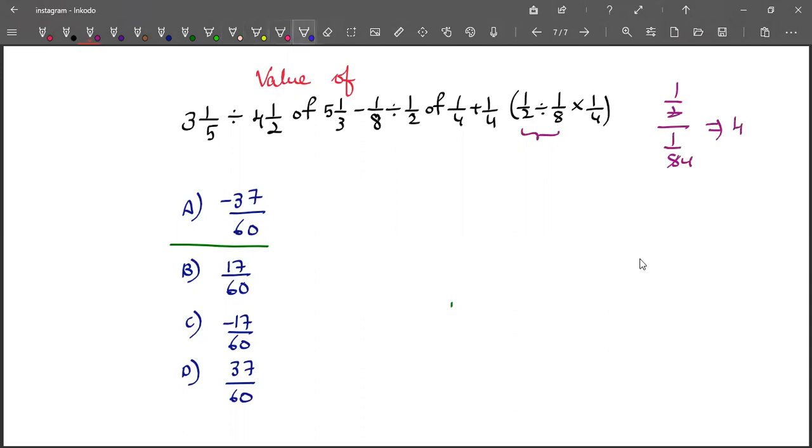When this 4 multiplied with 1 by 4, we are going to get 1. So this entire thing becomes 1. 1 by 4 into this particular 1 is 1 by 4. Next.